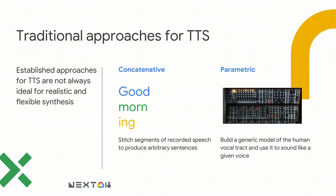On the other hand, with parametric approaches, we have a linguist build a model or a mathematical function that approximates how the human vocal tract works. Then we learn, sometimes using machine learning, how to drive that model to be able to say the things we want to say and to resemble the speaker we want to match.